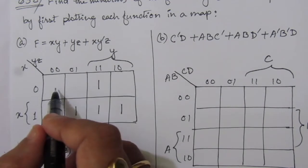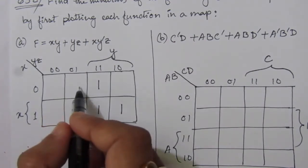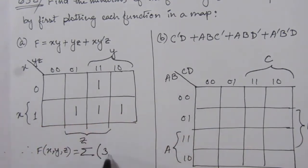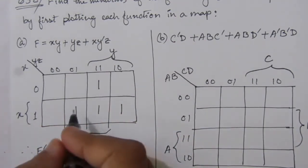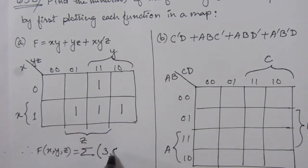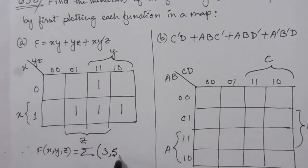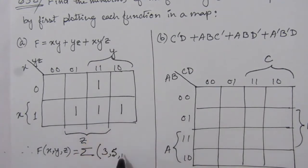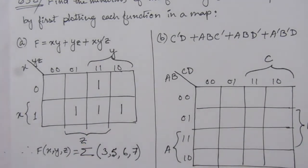Now we have to find the sum of minterms expression. The minterms are 1, 3, 4, 5, 6, and 7. This is the sum of minterms expression of the given function — or the simplified sum of minterms expression for the given expression.